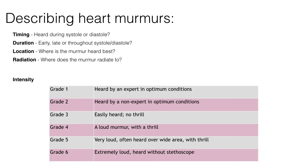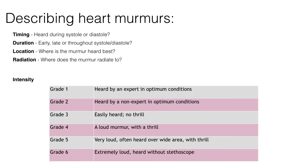When listening to the precordium you need to think of five factors when describing a murmur. First, timing — was it heard during systole or diastole? Then duration — was it early, late, or throughout the systolic or diastolic phase? Then location — where did you hear it best on the precordium? Then radiation — does it radiate anywhere? For aortic stenosis listen to the carotids, and for mitral regurg listen to the left axilla. Finally, intensity — graded one to six, where one is heard by an expert in optimal conditions and six is extremely loud and heard without a stethoscope.